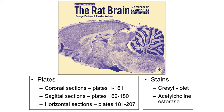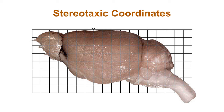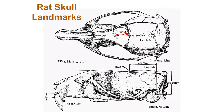Looking at how stereotaxic coordinates are arranged, they essentially overlay the brain on a millimeter-by-millimeter grid system. A very useful coordinate is bregma — the intersection of the coronal and sagittal sutures on the skull — which can be marked as the 0, 0, 0 point in a Cartesian coordinate system. From there, you can easily access any coordinates needed during surgery on the rat brain.